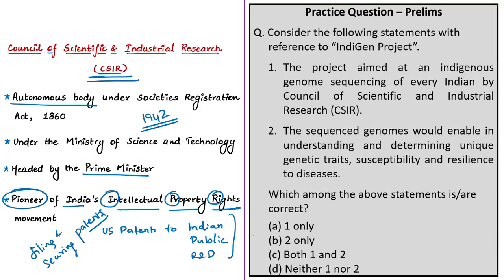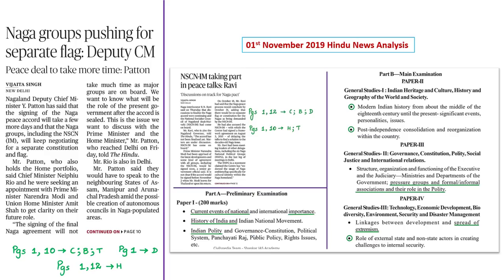CSIR is said to be a pioneer of India's Intellectual Property Rights movement. Of the total US patents granted to any Indian publicly funded R&D organization, 90% are granted to CSIR. It is also a leader in filing and securing patents at the international level among publicly funded research organizations globally. From this news article we saw about genome sequencing, the IndiGen project, its significance, and some facts about CSIR.